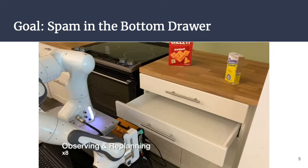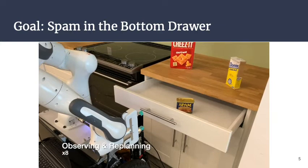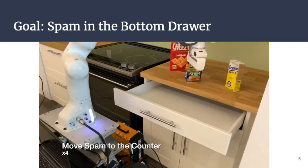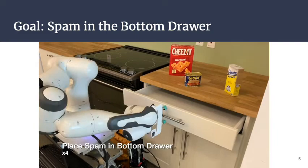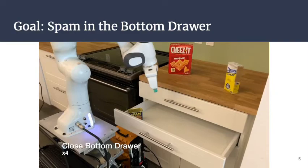Here's an example of a task we'd like to solve. The goal is for the robot to place the spam in the bottom drawer, and it starts off with a uniform prior over both drawers. When it opens the bottom drawer, it fails to detect the spam and thus adjusts its belief about where the spam is. Next, it opens the top drawer and gets a successful detection. However, the robot must first place the spam in an intermediate location — such as on the tabletop — because it can't open both drawers at the same time due to the width of the robot's gripper. The robot successfully deduces this, places the spam on the counter, moves the spam to the bottom drawer, and completes the task.